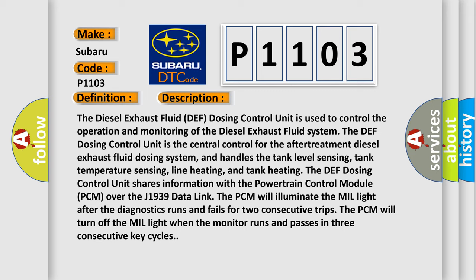The DEF dosing control unit shares information with the powertrain control module PCM over the J1939 data link. The PCM will illuminate the MIL light after the diagnostics runs and fails for two consecutive trips.